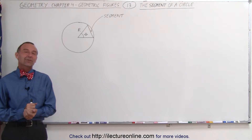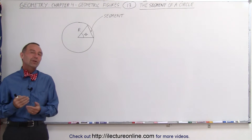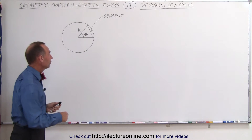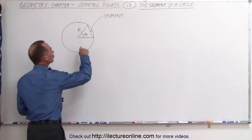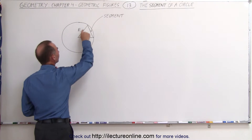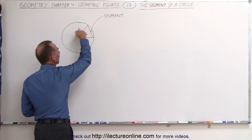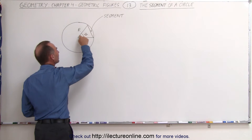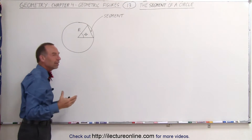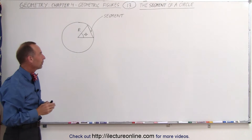Welcome to Electronline. In the previous video we looked at the sector of the circle. That's where we drew two lines from the center of the circle to the edge of the circle. We had an angle between them and that entire area was representative of what we call the sector of the circle.